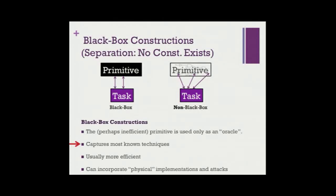When something is black box, you don't care about efficiency — it could be highly inefficient and you can still use it as an oracle. Black-box constructions are usually more efficient, which is one reason we care about them, and they are a more modular way of designing protocols. They can even incorporate things that are not really Turing machines, like a human brain.